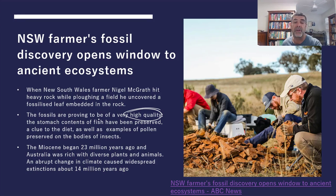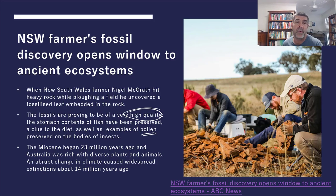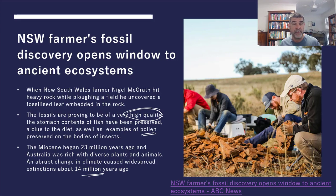Pollen grains preserved on the bodies of insects — we looked at pollen previously and how important it is to determine the nature of flora in an ancient environment. Interestingly, these fossils have been aged around the Miocene, so from about 23 million years ago we know there was quite a diversity of plants and animals, but there were changes happening in the climate that led to widespread extinction events around 14 million years ago. When we find new fossils, we get an opportunity to complete pieces of the puzzle and get an idea of what's actually been going on in the past.